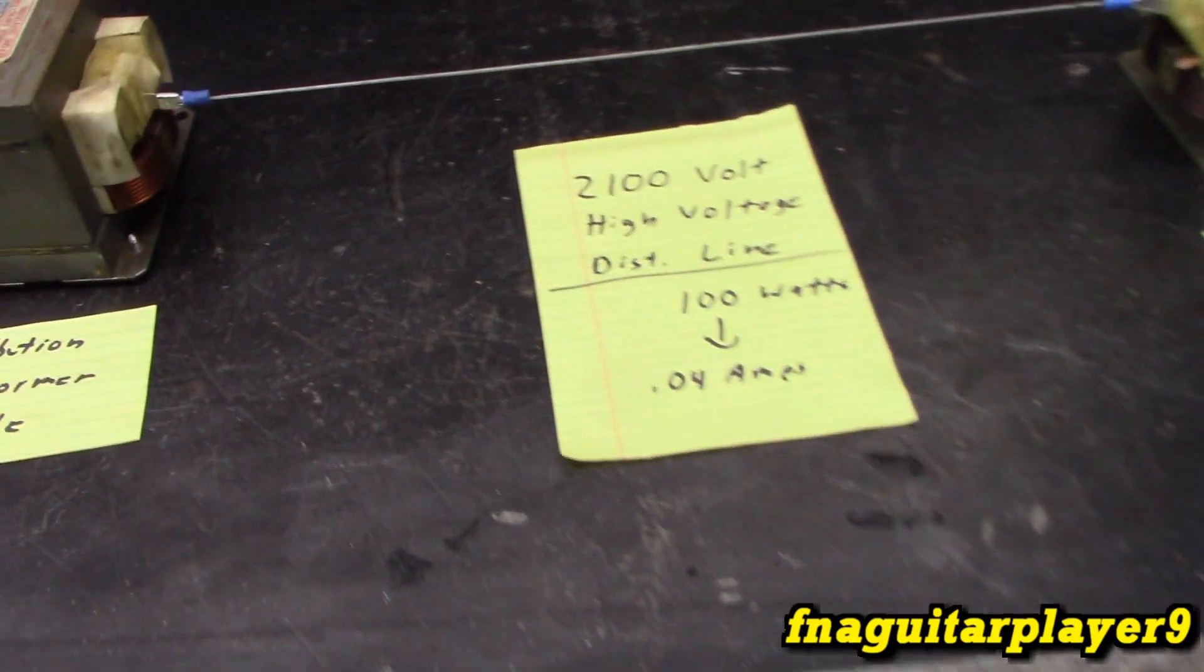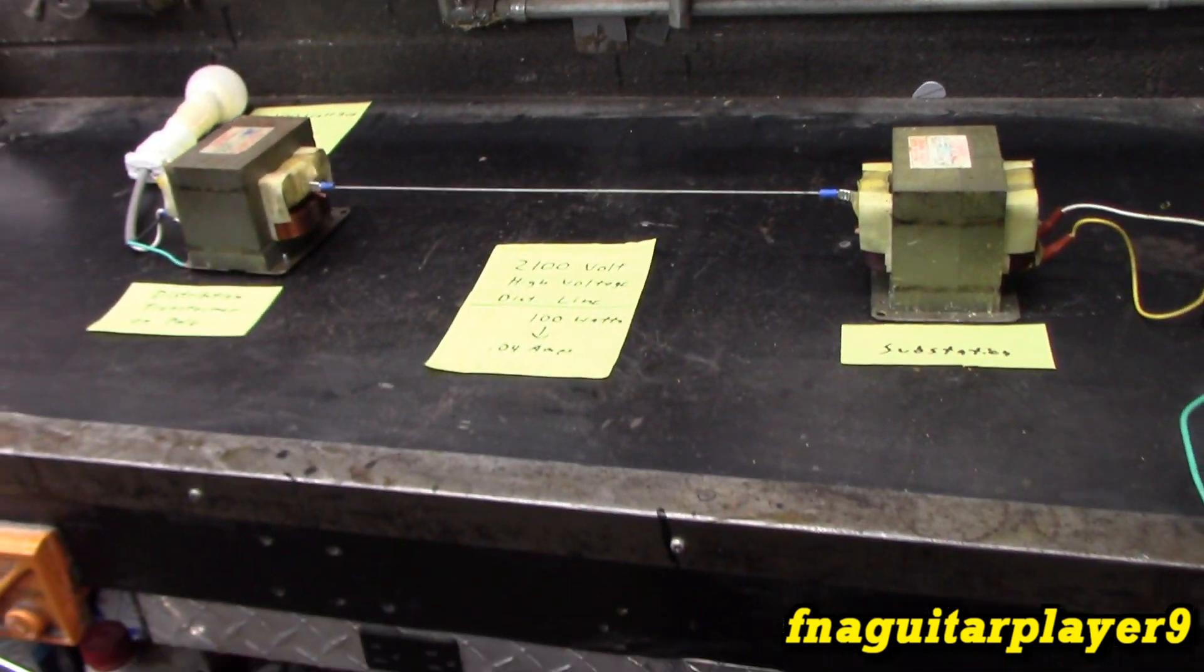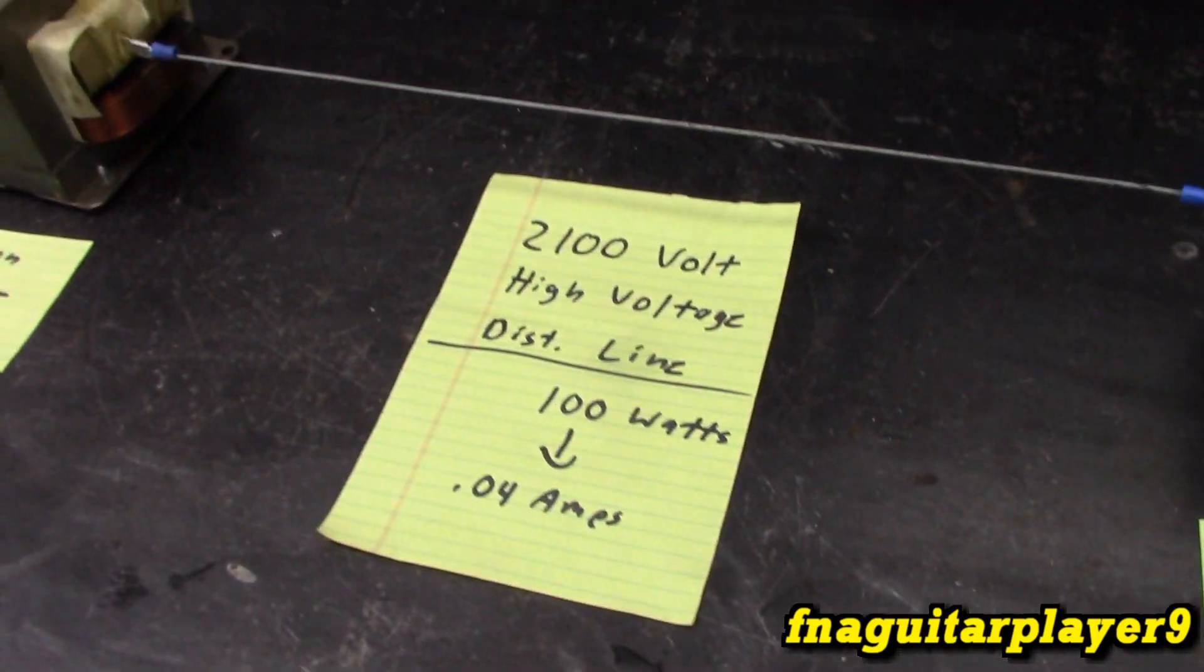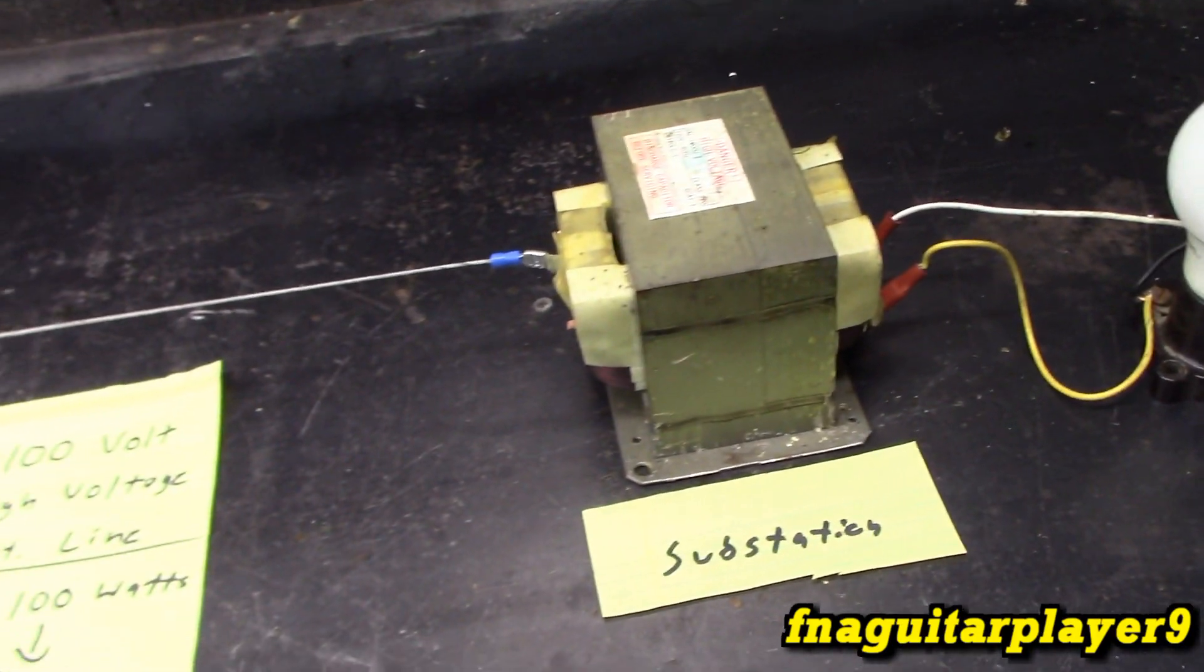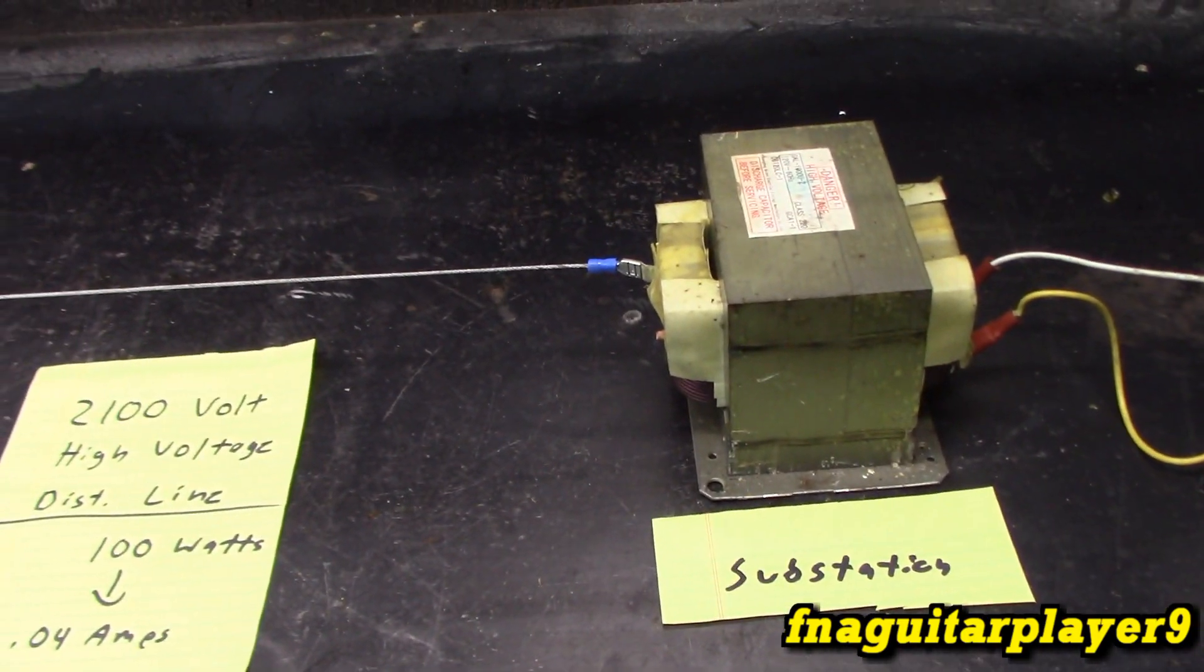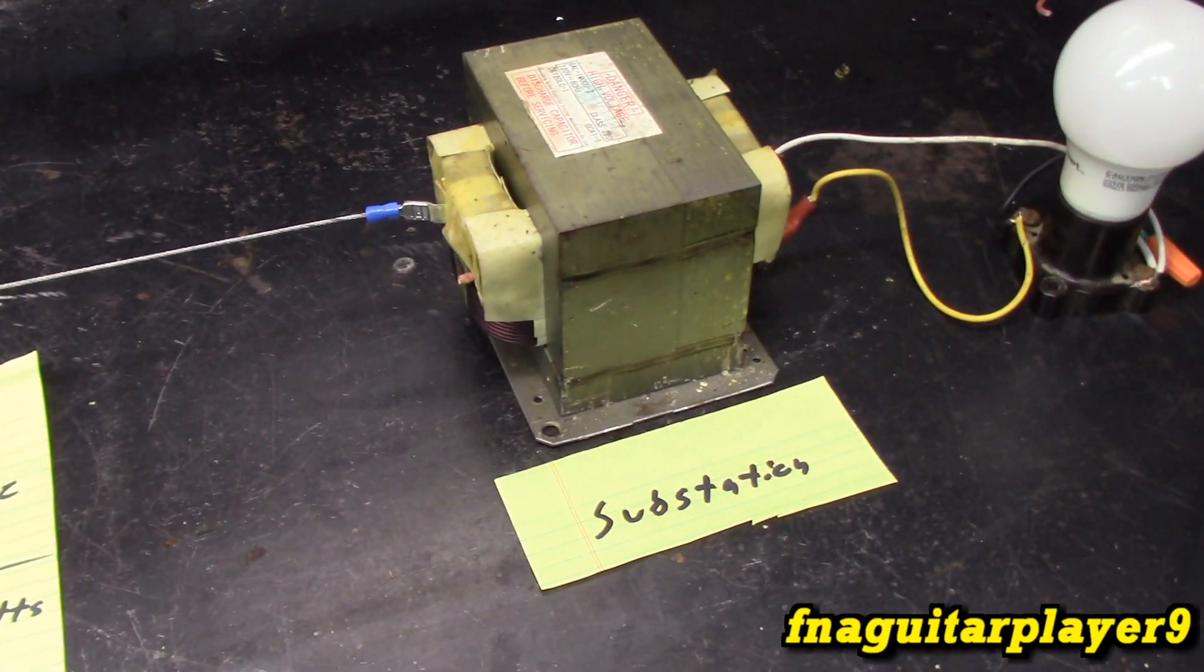So if you're familiar with ohms and watts law, this applies to watts law. Power stays the same minus efficiency laws. So in a perfect world, the wattage or power will stay the same. So this transformer is seeing a hundred watts.